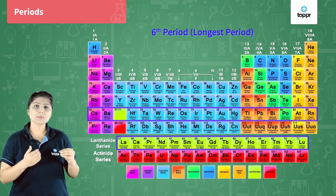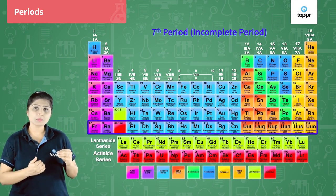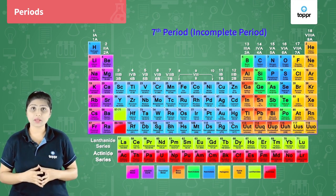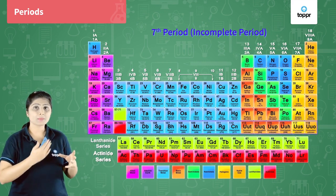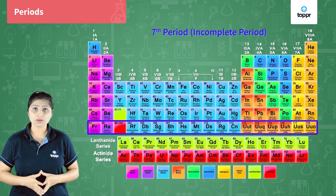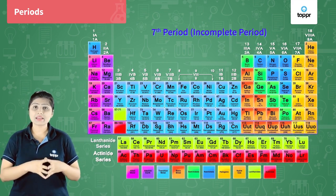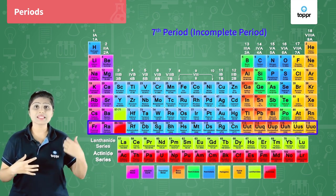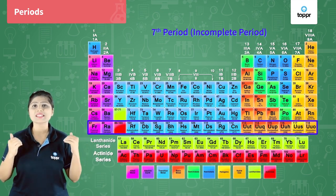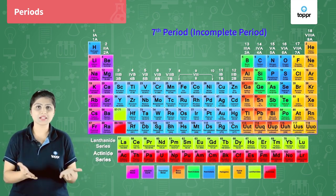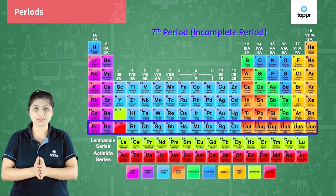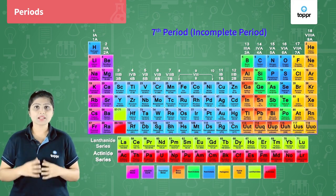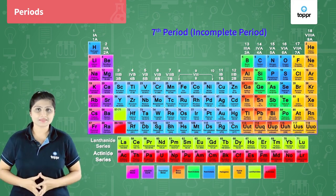Just like the sixth period, the seventh period is also showing that it should have 32 elements, because some of the elements are placed below. But the seventh period does not have all 32 elements — some elements are missing because they are still to be included in the periodic table, leaving blank spaces. So the seventh period is called the incomplete period.